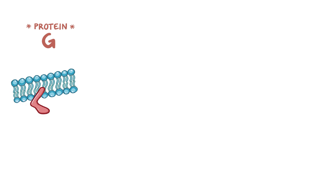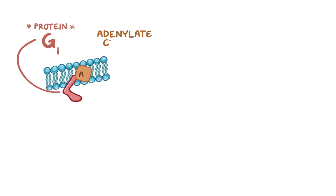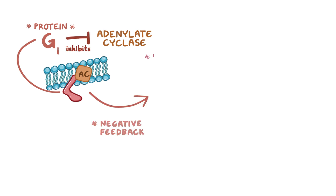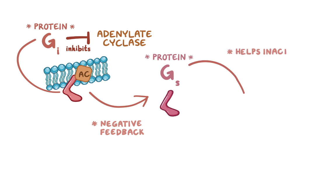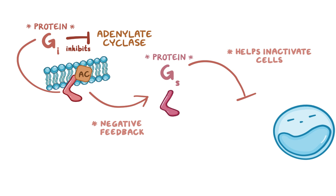Finally there's protein GI, which is also bound to adenylate cyclase, but in this case it inhibits it, causing negative feedback on protein GS. This is particularly important in helping to inactivate cells.